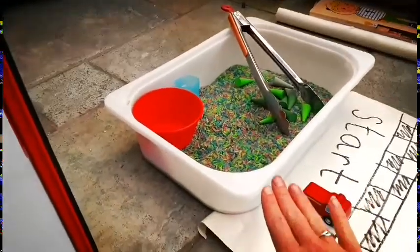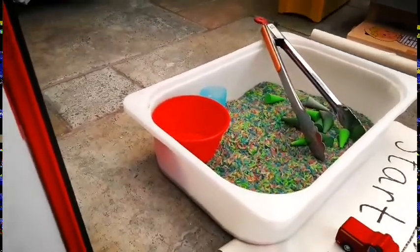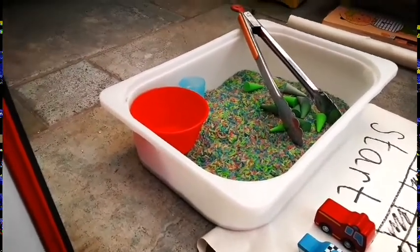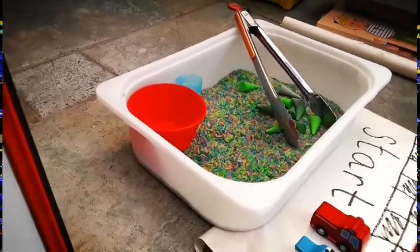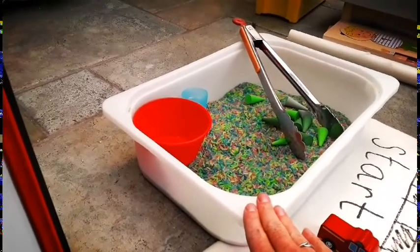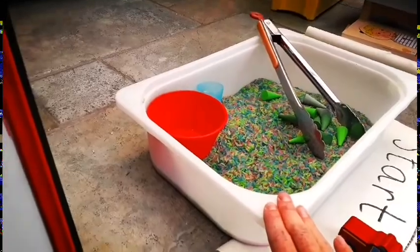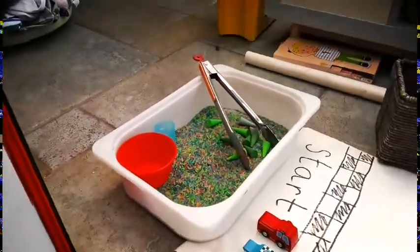So over here we have a bucket of rainbow rice. Rainbow rice is really easy to make. It's just rice, a little bit of vinegar and some food colouring. You shake it all about in a bag and leave it to dry overnight and it's a really really good resource for loads of things. I know both P2s and 3s are doing capacity this last two weeks and the next week ahead so it's really really good for doing capacity as well.